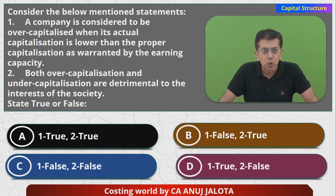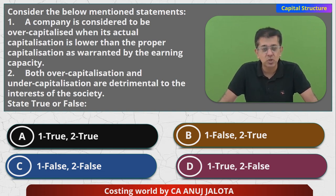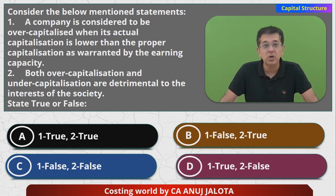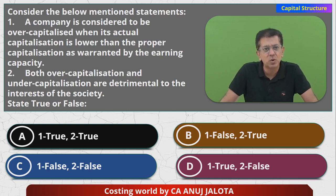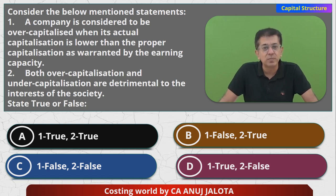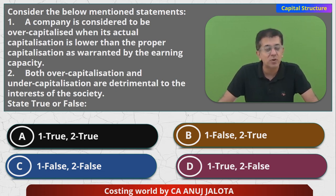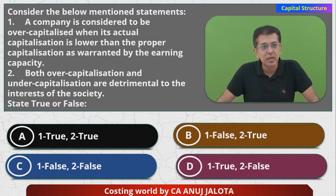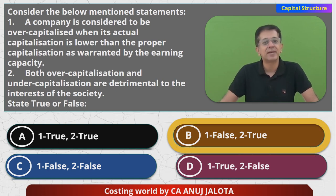The second statement — both over-capitalization and under-capitalization are detrimental to the interest of the society — is TRUE. In over-capitalization, you are using society's funds but not earning adequate returns on them. In under-capitalization, the business is not running properly, not giving adequate return, and funds for growth are not accessible. So second statement is true. First is false, second is true — the answer is option B. That is the correct answer.